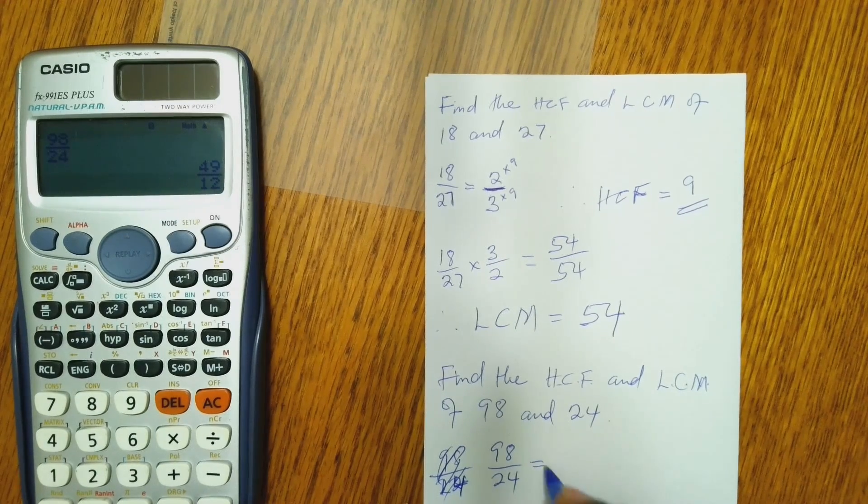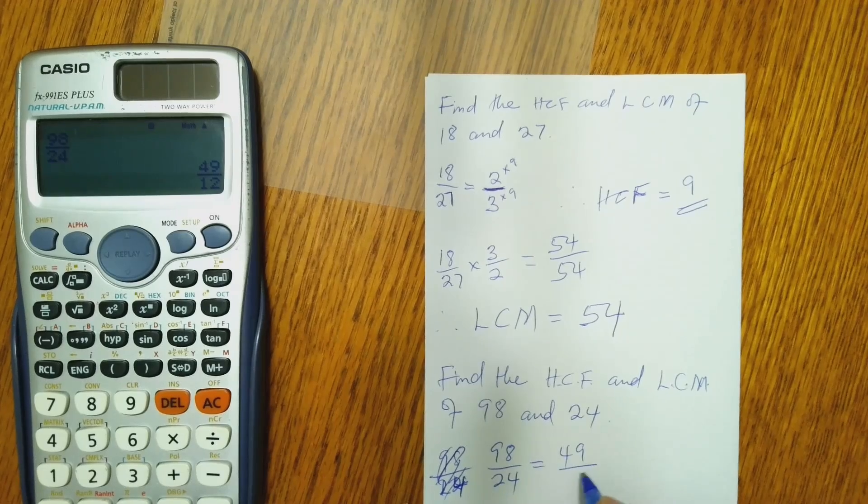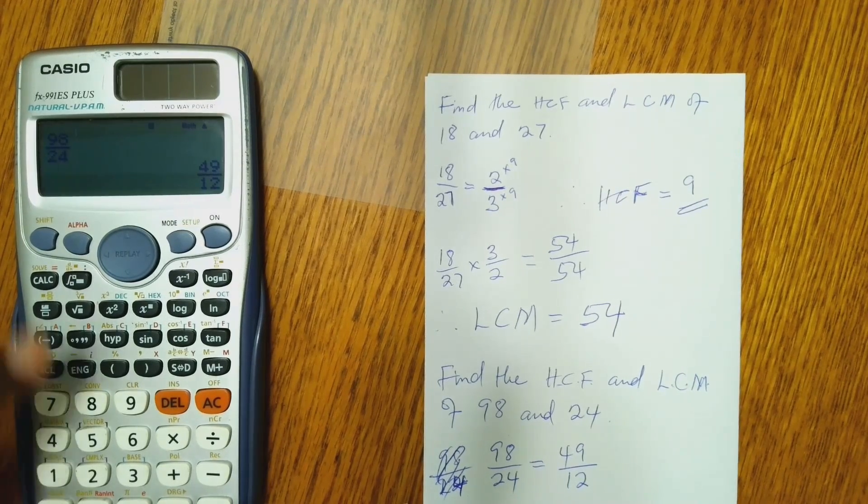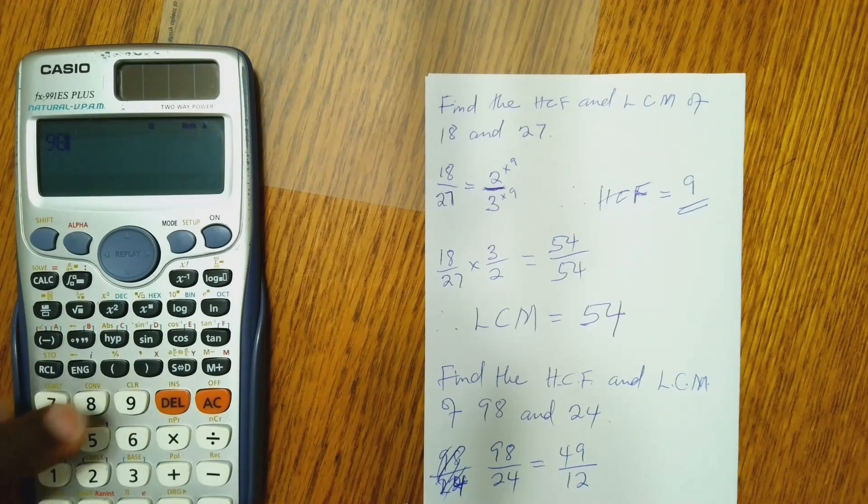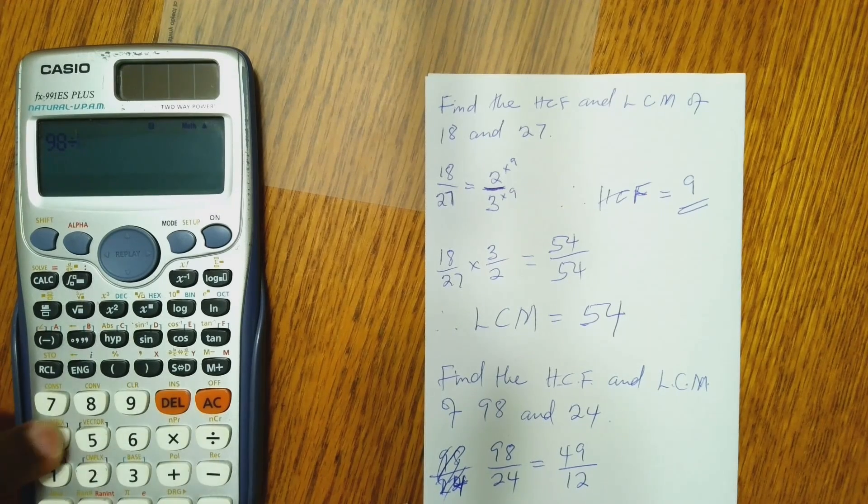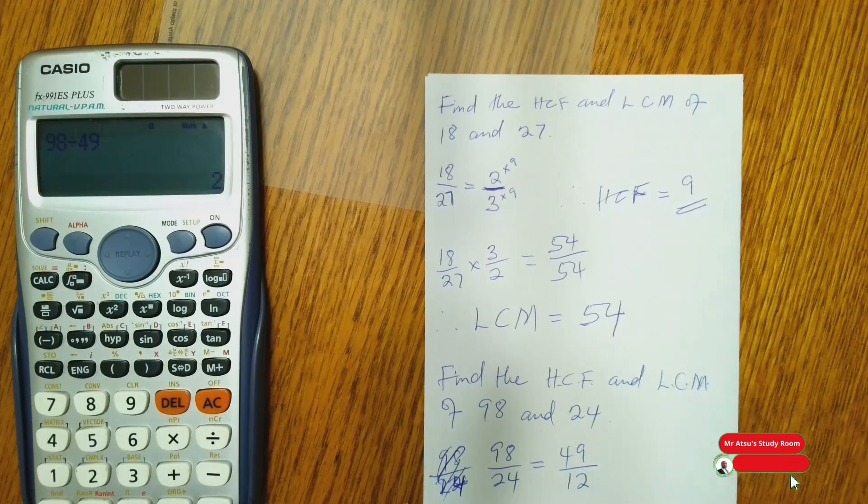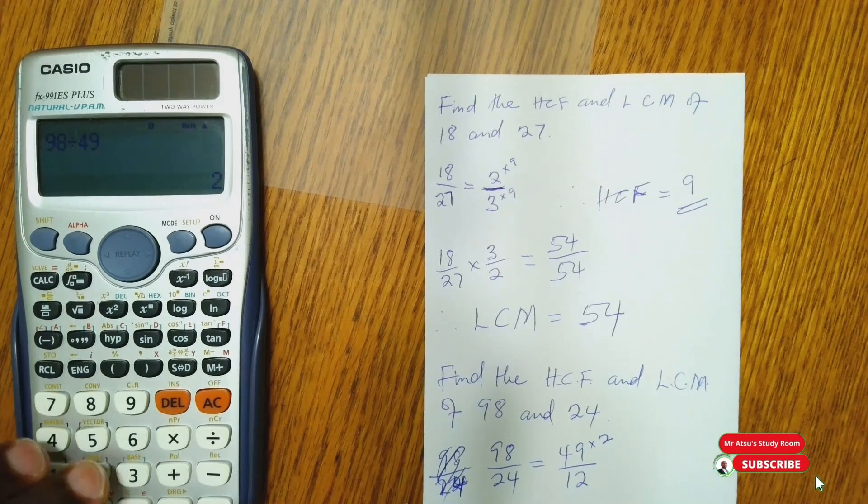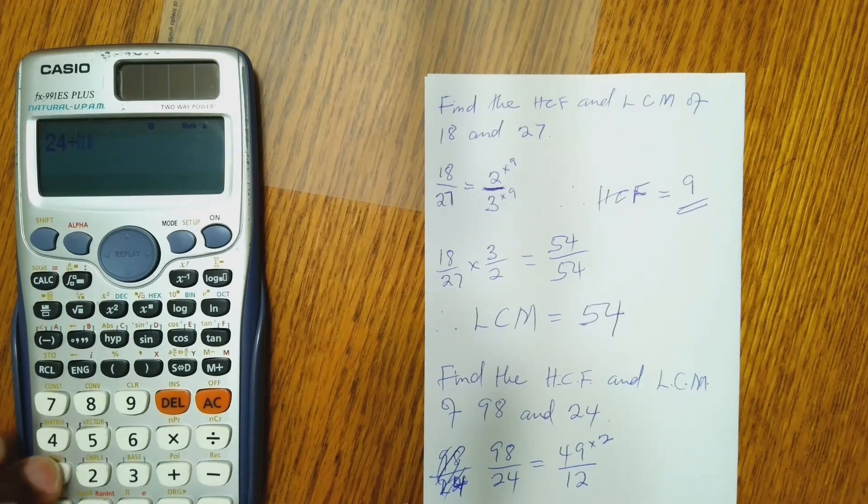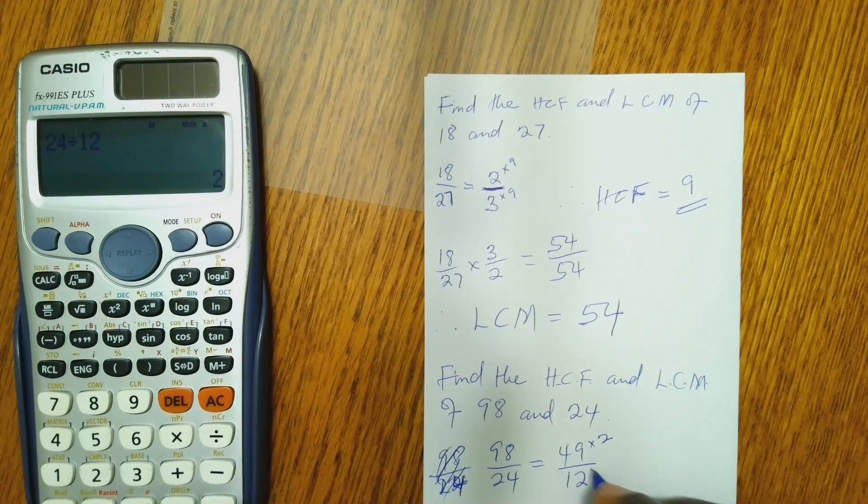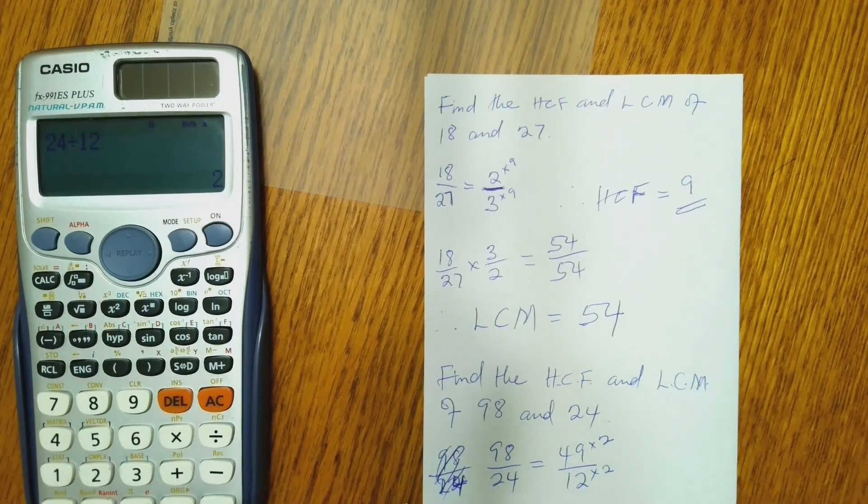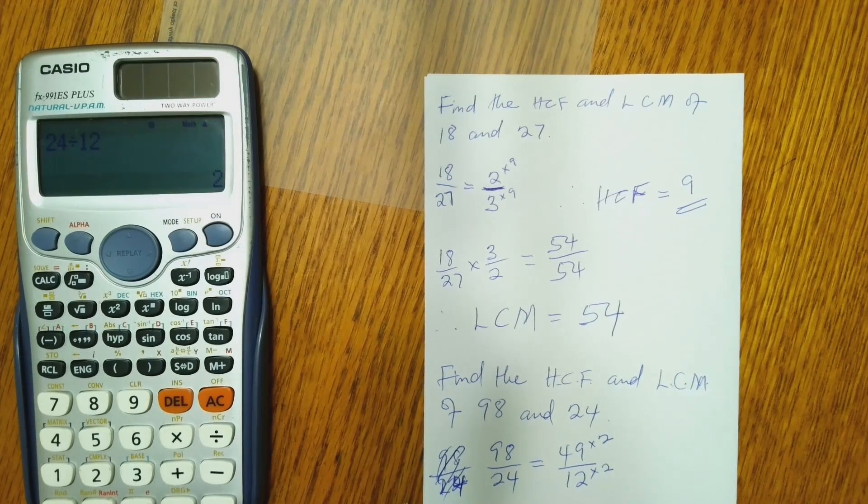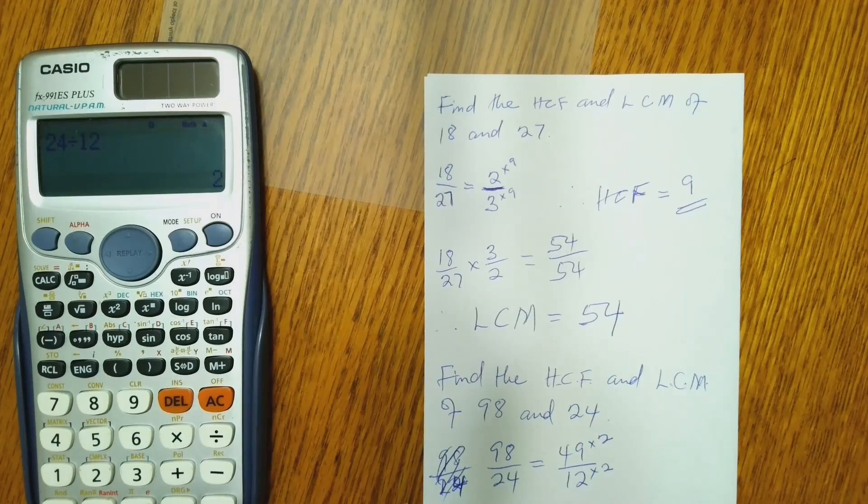Then on our calculator we get 49 over 12. So now we divide 98 by 49. 98 divided by 49. And that is 2. So that means 49 times 2 equals 98. Then 24 divided by 12 is also 2. So always the number should be the same. So that means that our HCF or the highest common factor for 98 and 24 is 2.